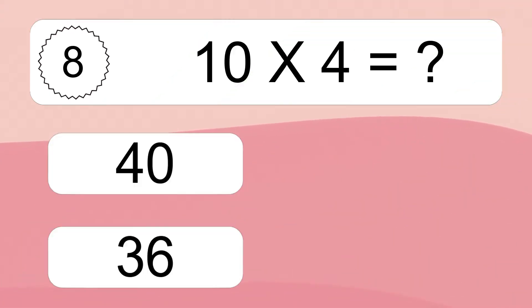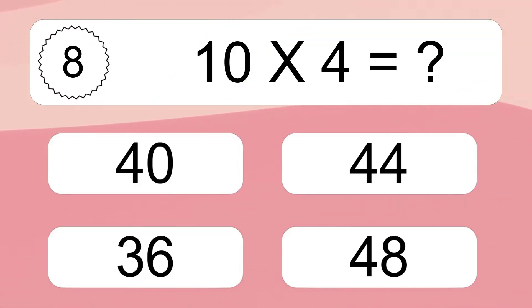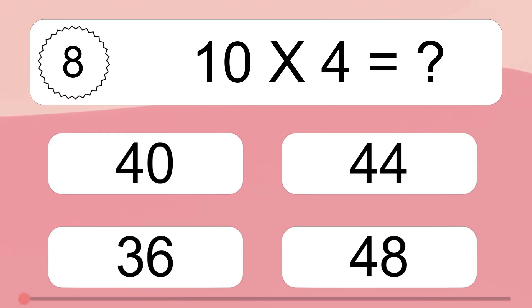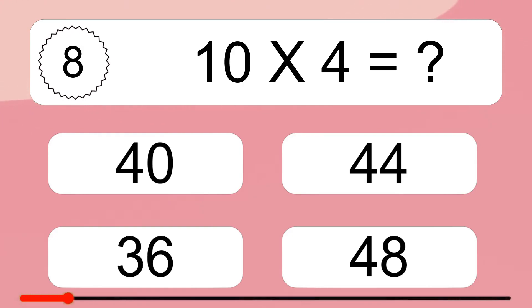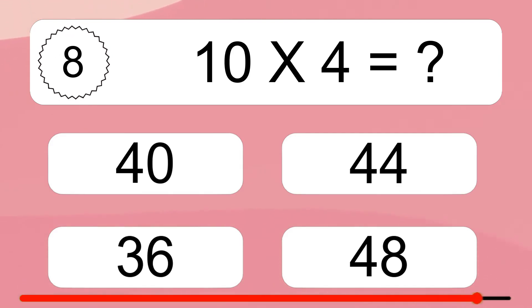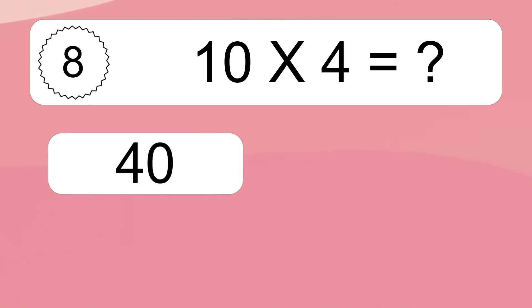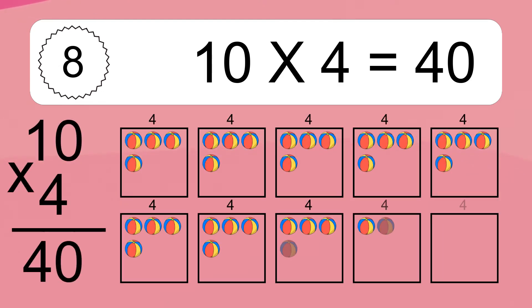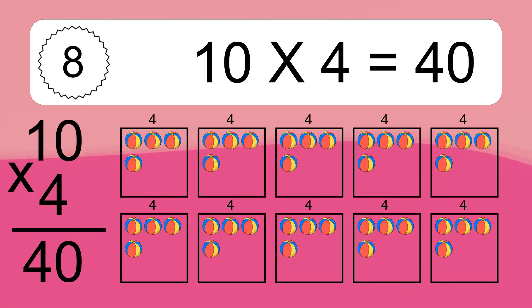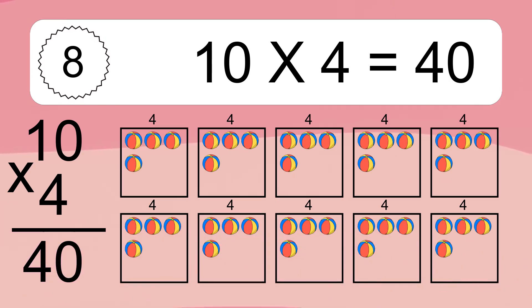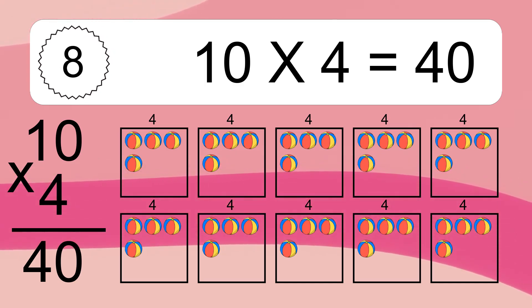10 times 4 equals what? 10 times 4 equals 40. We have 10 boxes, and each box has 4 colorful balls inside. If you count all the balls in all the boxes together, you will have 10 times 4 balls. This equals 40 balls.